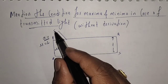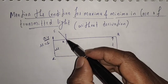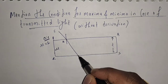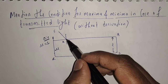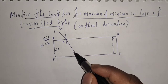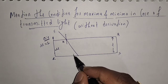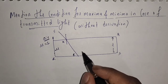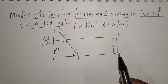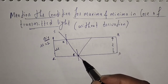Let us suppose a light ray SA is incident on PQ. I am going to draw a normal. Some part of the light gets reflected and some part gets transmitted. I am not going to draw the reflected rays here because we are going to write the condition for transmitted light. So I am going to draw only transmitted light rays. This transmitted ray I am going to denote by AB. When ray AB is incident on RS, some part of it gets reflected and some part gets transmitted.